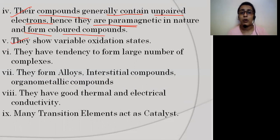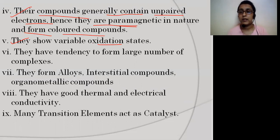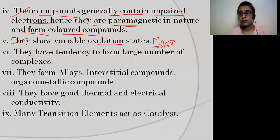They show variable oxidation states. For example, copper shows Cu+ and Cu2+. Manganese is the element that shows the highest oxidation state of +7 in the 3D transition series — its oxidation state varies from +1 to +7, showing many different oxidation states.